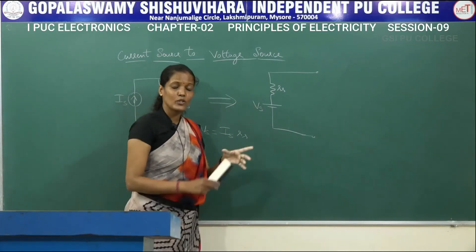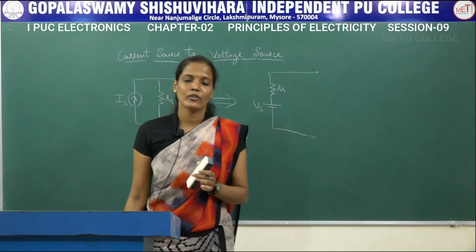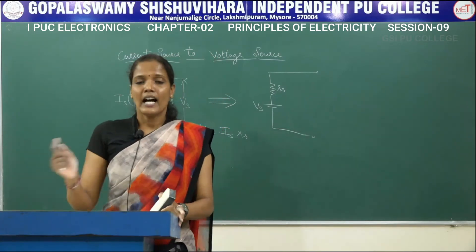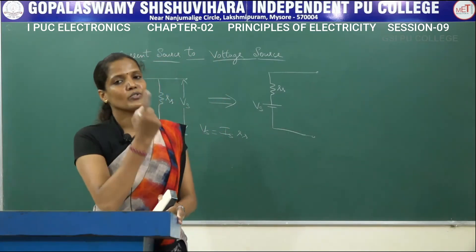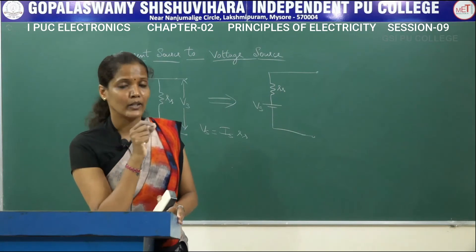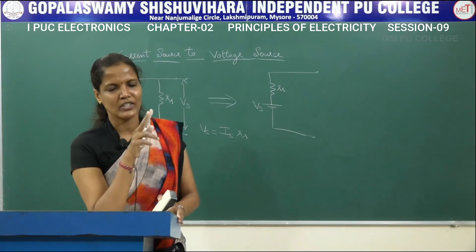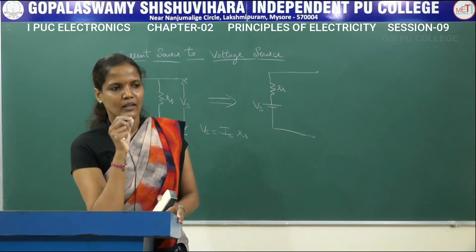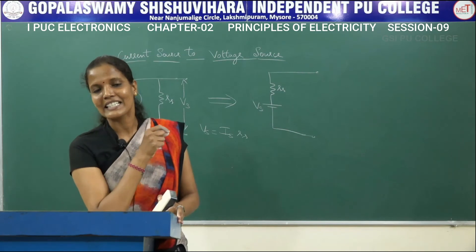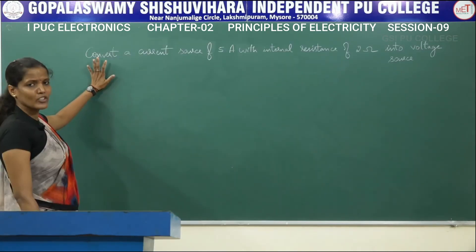So, to convert a voltage source into a current source, you find the current Is. To convert a current source into a voltage source, you find the voltage Vs. That is the major difference. You will understand this clearly when we solve a problem.